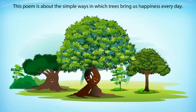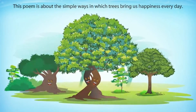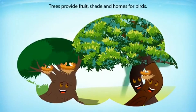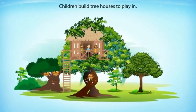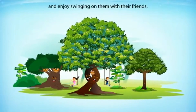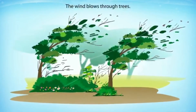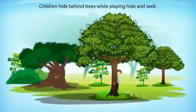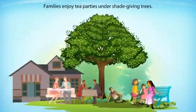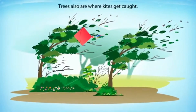This poem is about the simple ways in which trees bring us happiness every day. Trees provide fruit, shade, and homes for birds. Children build tree houses to play in and hang swings from the branches. The wind blows through trees. Children hide behind trees while playing hide and seek. Families enjoy tea parties under shade-giving trees. Trees are also where kites get caught.